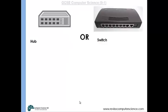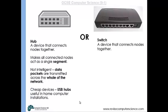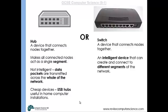A hub or switch is often required and sits at the centre of the network, allowing data to pass between computers. A hub is not an intelligent device — data packets are sent across the whole network, causing more traffic, though hubs are cheaper. A switch is an intelligent device that directs data from one specific computer to another, reducing network traffic.